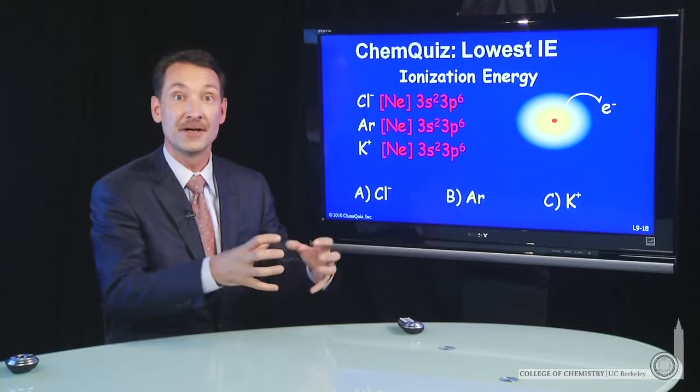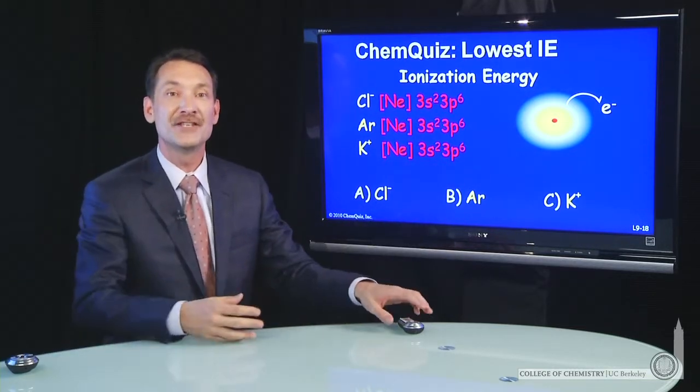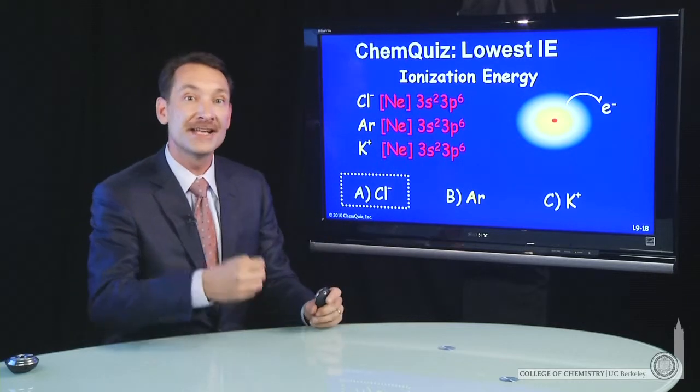Fewer nuclear charges will allow it to expand and be easier to ionize. So among these three, it's the one with the smallest nuclear charge that's the easiest to ionize, and that's chlorine. Chlorine minus, easier to ionize than argon or potassium plus.